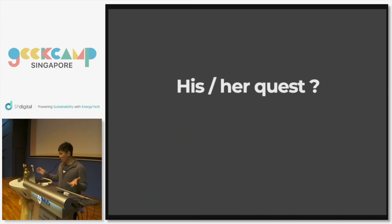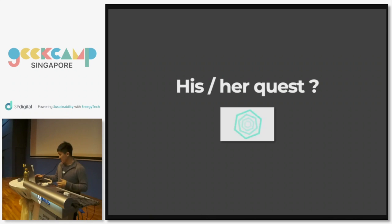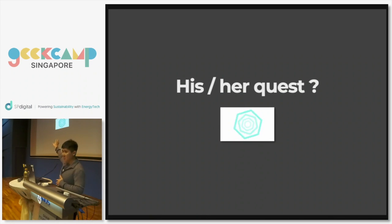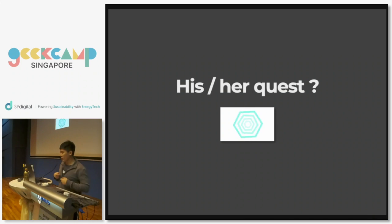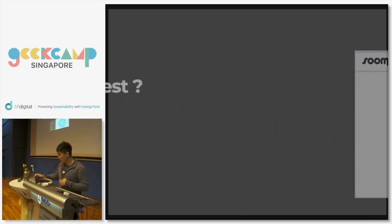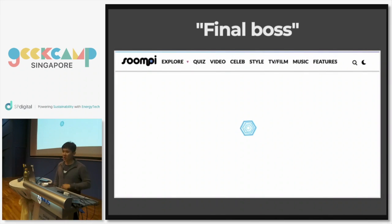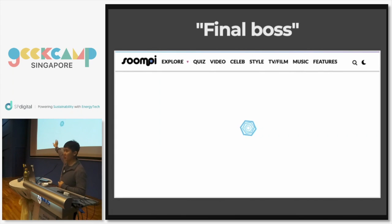As with all adventures, there are always quests that you need to complete along the way, and my quest was this thing — a preloader icon. You can see there are multiple hexagons in there, rotating in different orientations. There are four hexagons in total. And every adventure has a final boss; in my case I just need to embed this loader into the website soupy.com.